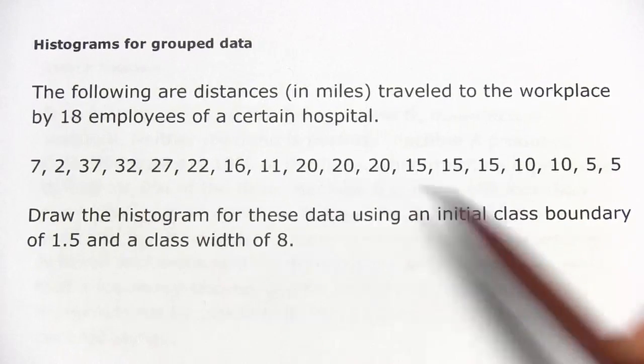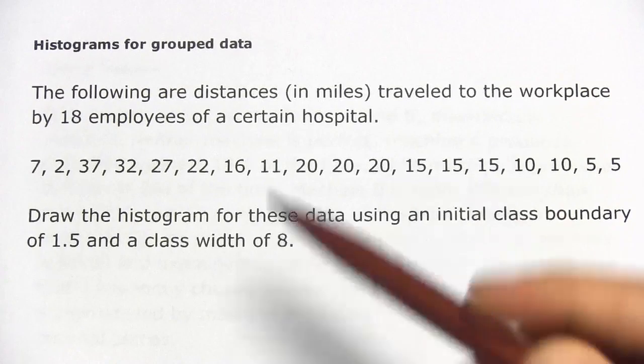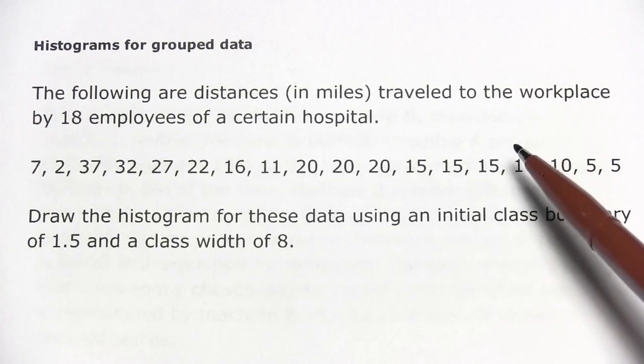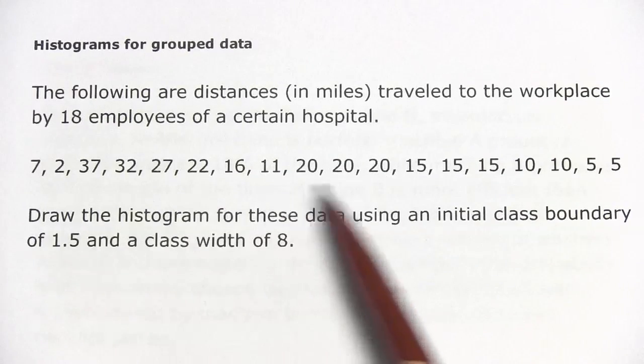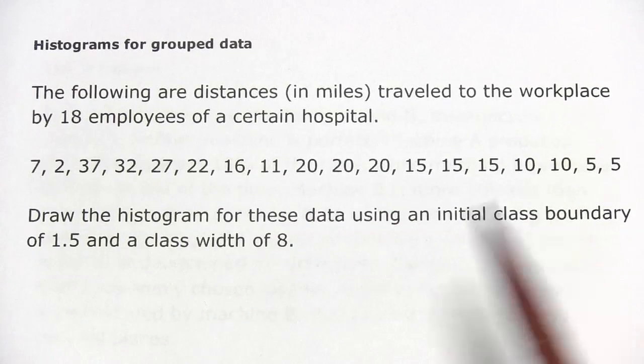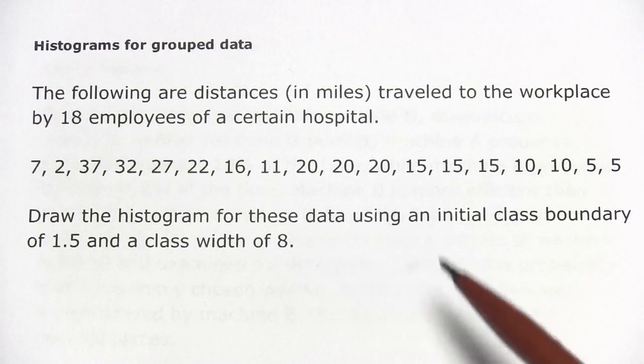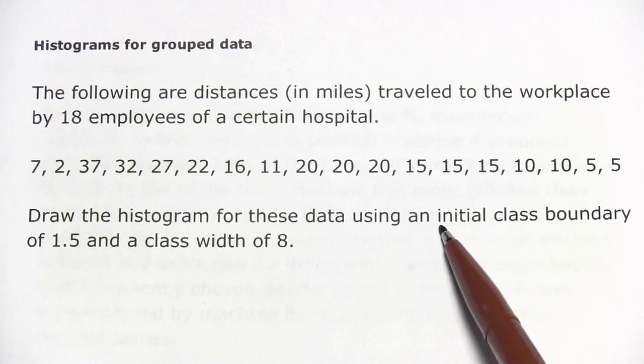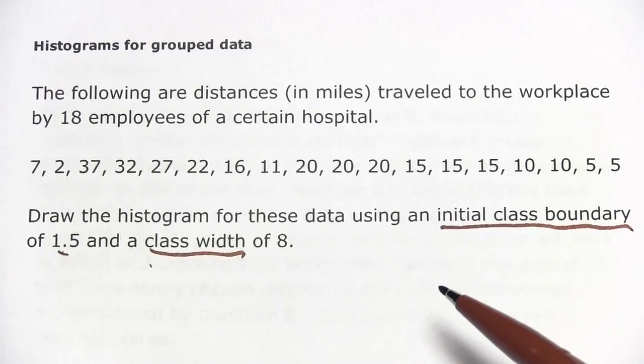In this problem, we're being given a set of data and we're being asked to make a histogram for it. The following are distances in miles traveled to the workplace by 18 employees of a certain hospital. And here you have all these numbers, miles they drive to work. Draw the histogram for these data using an initial class boundary of 1.5 and a class width of 8.